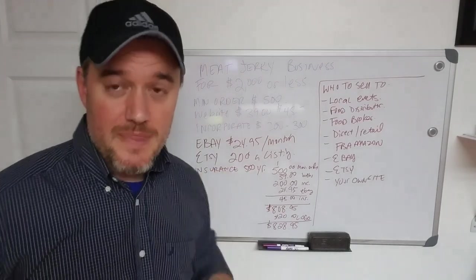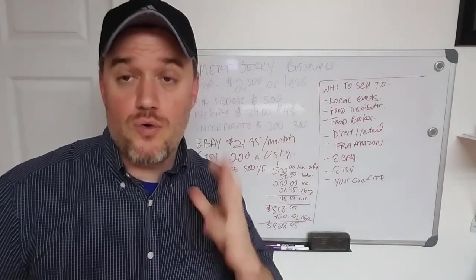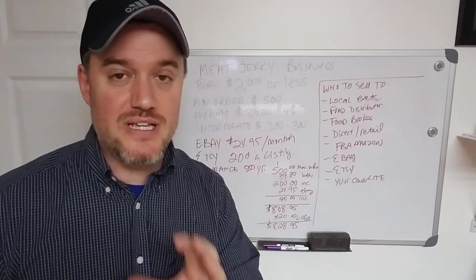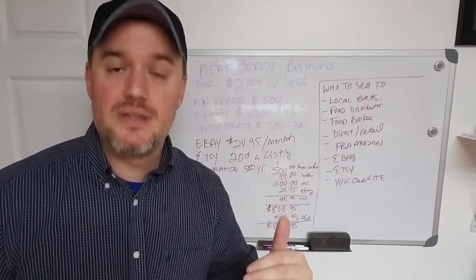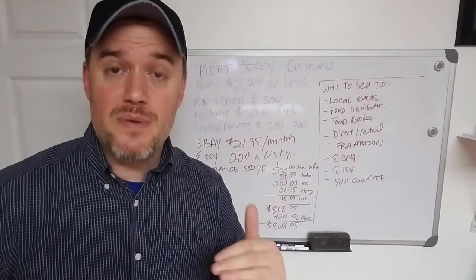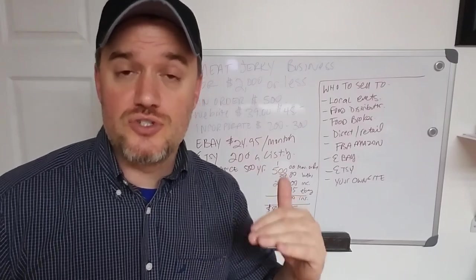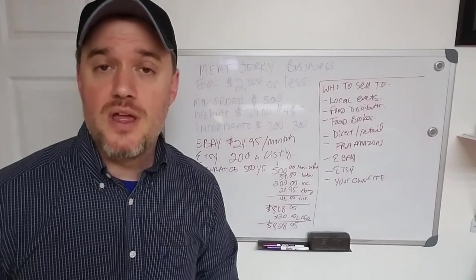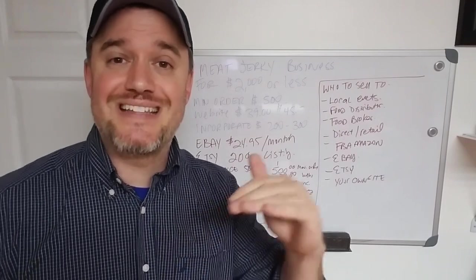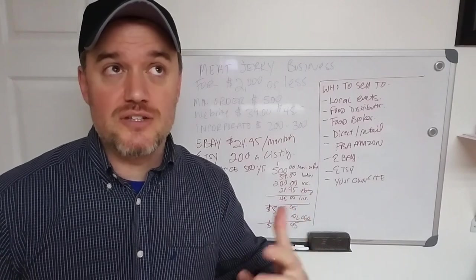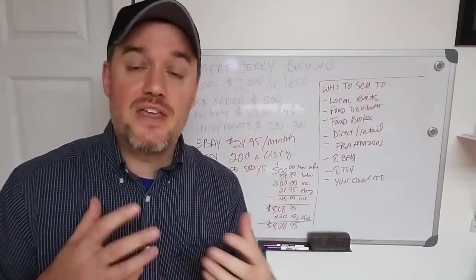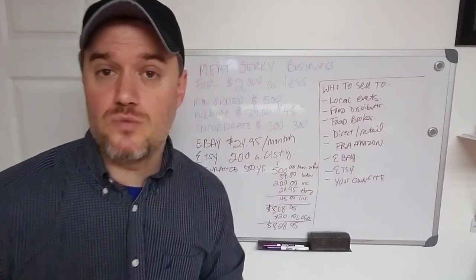Next up, insurance. Even though you're having a co-packer or private label company produce the product for you, I highly recommend you still get liability insurance, business insurance, small business insurance for your jerky business. That's normally going to run you around $500 roughly a year. Most insurance companies that sell insurance, like even Geico, believe it or not, Allstate Insurance, all of these companies have business policies, and they can even write food business policies as well.